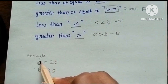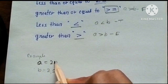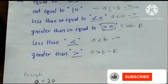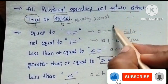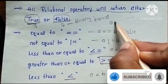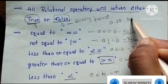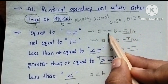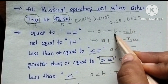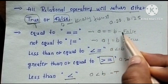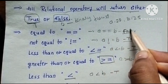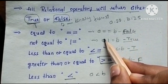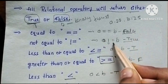For example, let a equals 20 and b equals 25. So a equal to b: 20 equal to 25 — this is false. And a not equal to b: